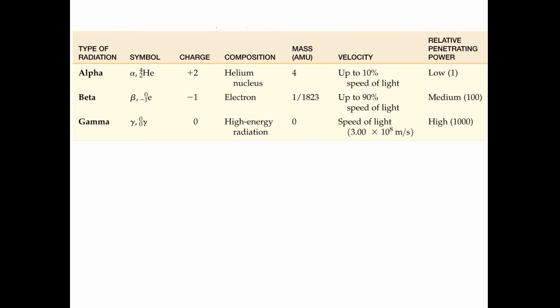This is a chart showing some of the characteristics of these types of radiation. Alpha radiation, we symbolize by the Greek letter alpha, or 4,2 He, indicating it has a charge of 2, a mass of 4 on an atomic scale. It's a high-energy helium nucleus, travels up to 10% of the speed of light, and it has a relatively low penetrating power. Similarly for beta, we symbolize it by the Greek letter beta, 0 for the mass, negative 1 for the charge, e for electron, much smaller than a helium nucleus, much faster, more penetrating power.